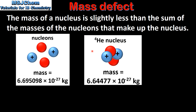Here we have a helium nucleus which is composed of two protons and two neutrons. Here we have the mass of the nucleus. On the left we have the nucleons that make up a helium nucleus — that's two protons and two neutrons — and here we have the mass of the four nucleons. If we compare the masses, we can see that the mass of the helium nucleus is slightly less than the mass of the four nucleons that make up the helium nucleus.